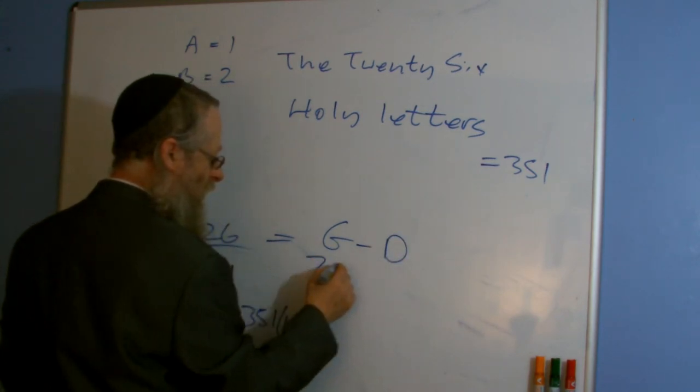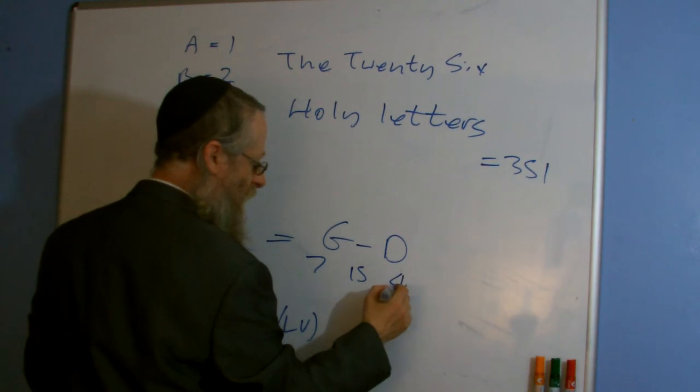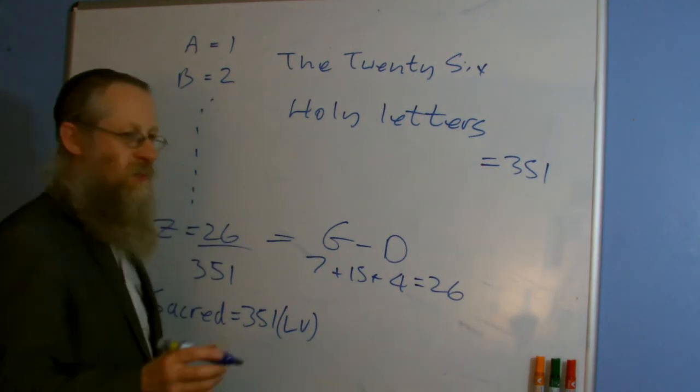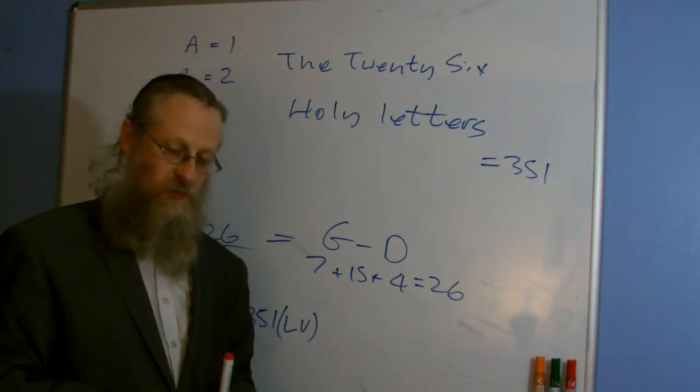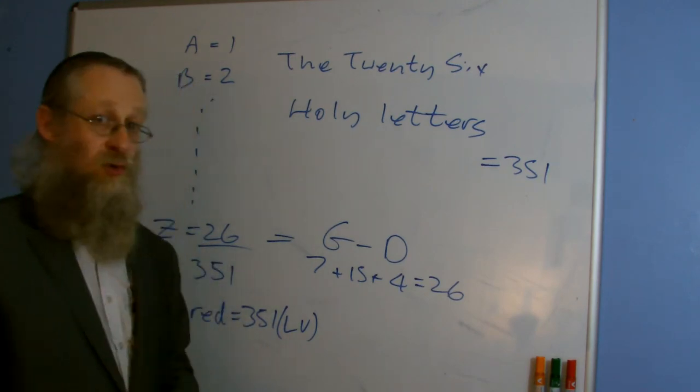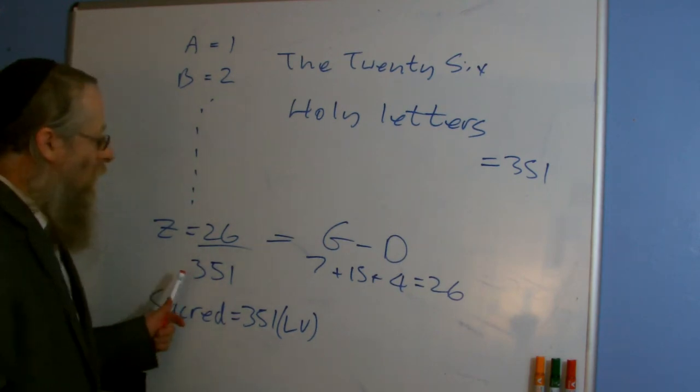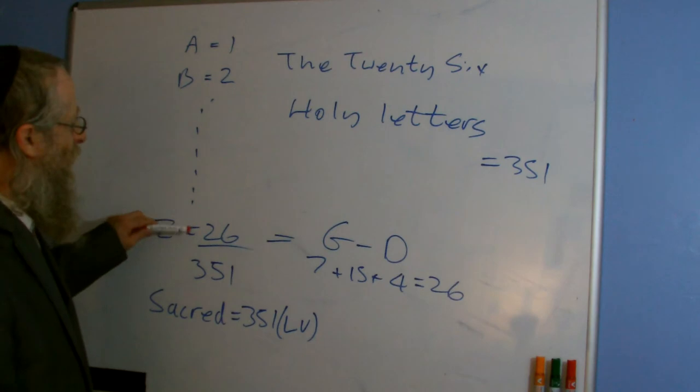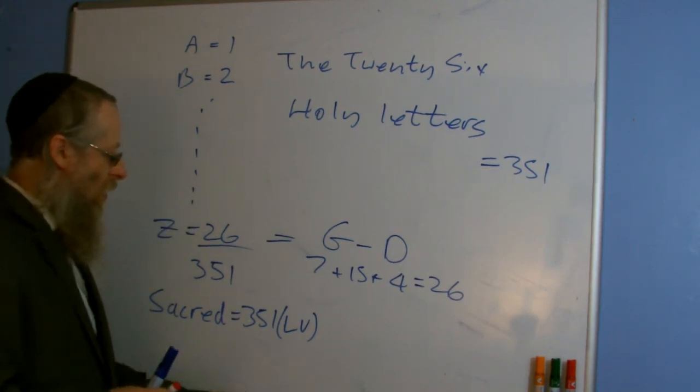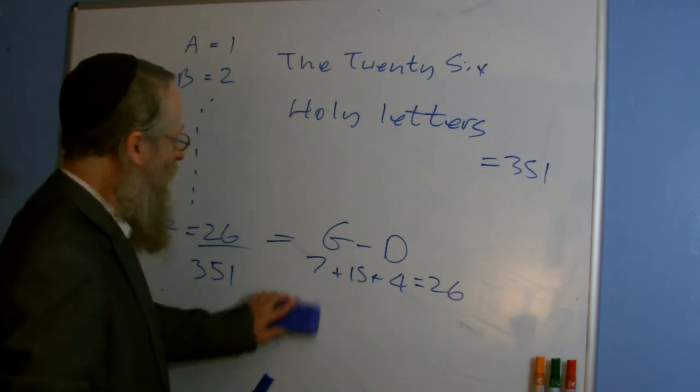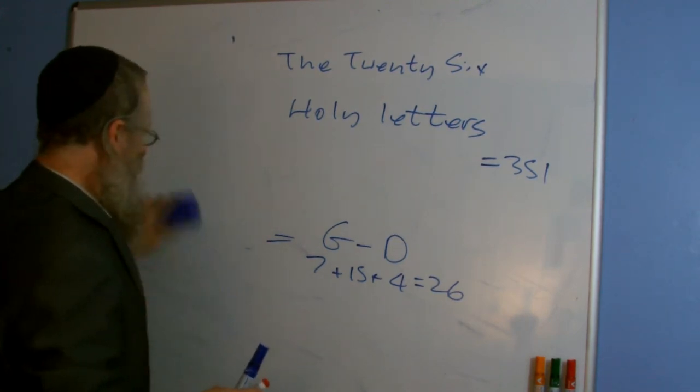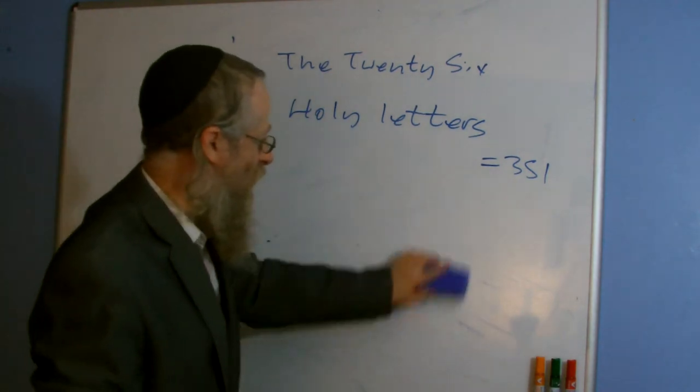And it's actually the placement value for God, which I won't write on the board. I'll use a dash for the O, because G is 7, O is 15, and D is 4, will give you 26. And you'll find, in Hebrew, the Hebrew name for God, one of the most important ones, called the Tetragrammaton, which we don't pronounce as it's written, is also equal to 26. So, we have an interesting sort of special significance to number 26.